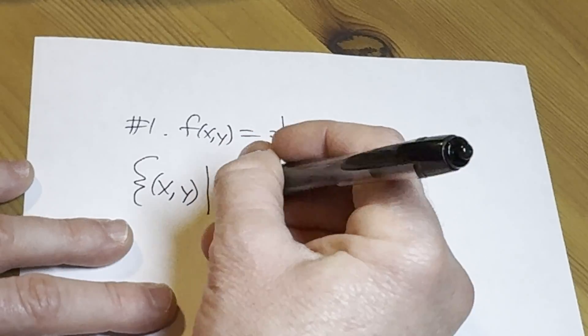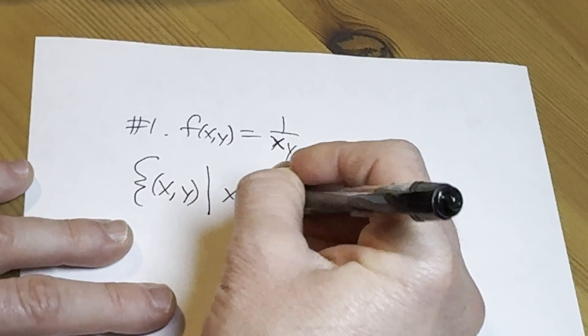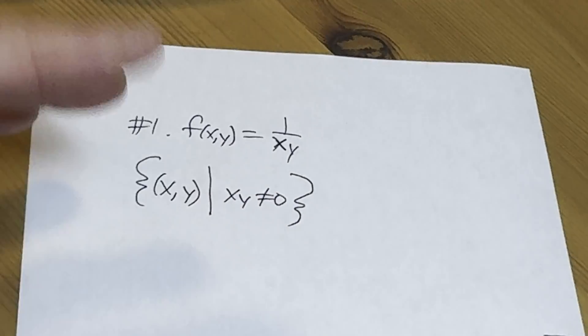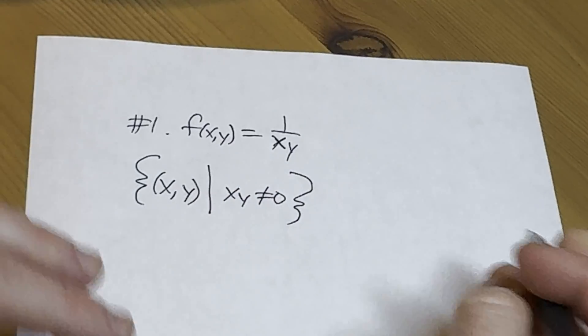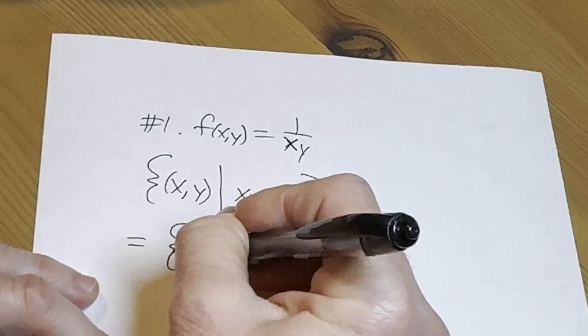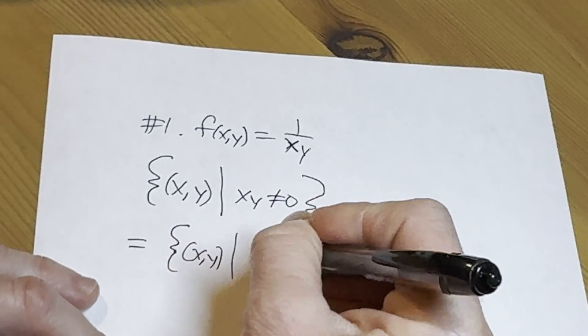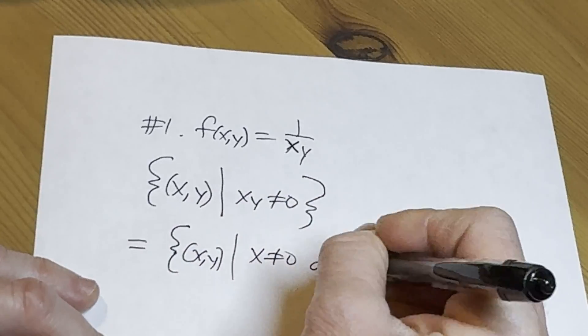And now we need a condition here. So what do we need? Well, xy can't be equal to zero. Right? So that would be, I guess, an acceptable answer. But this is equal to the set of all ordered pairs, x comma y, such that x is not zero and y is not zero.